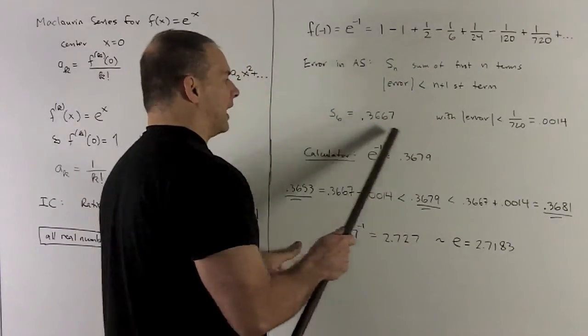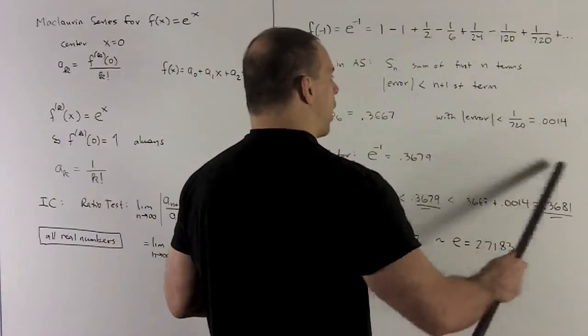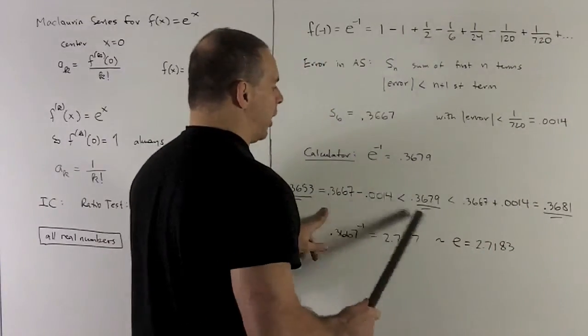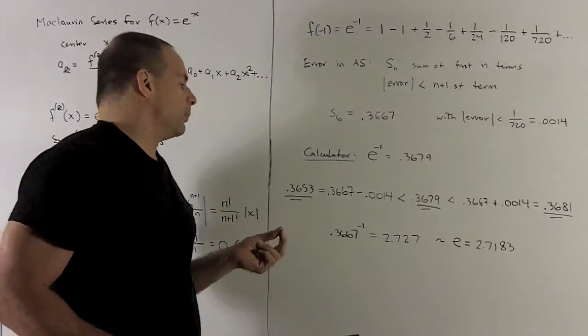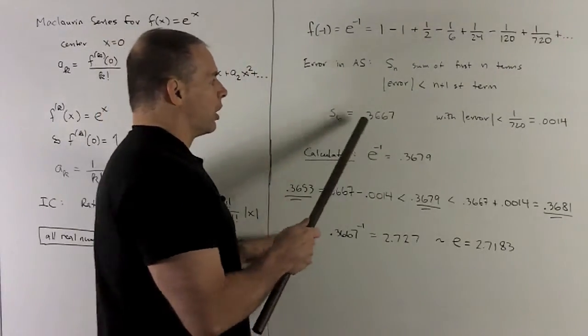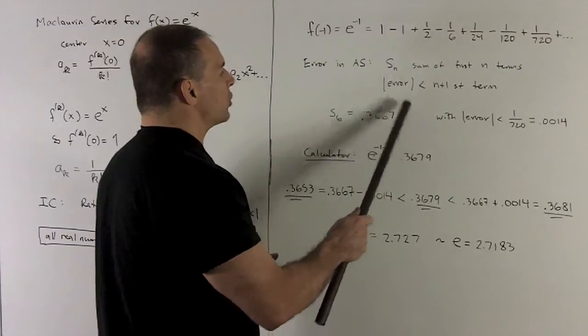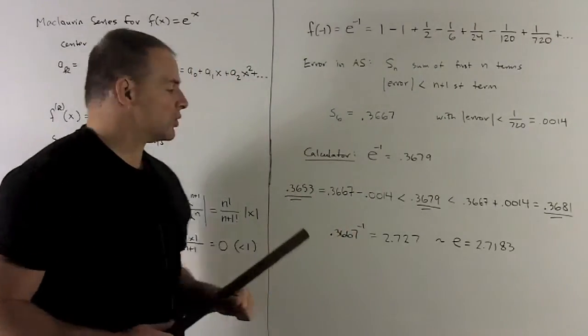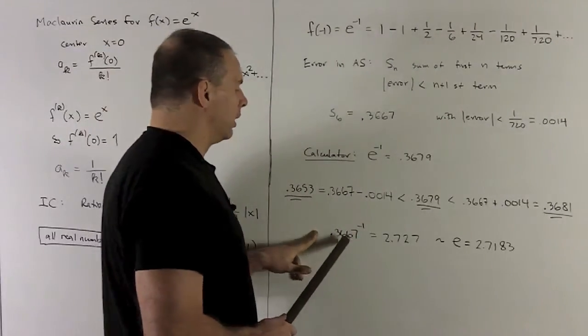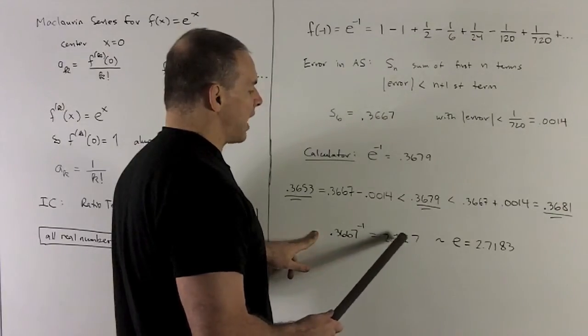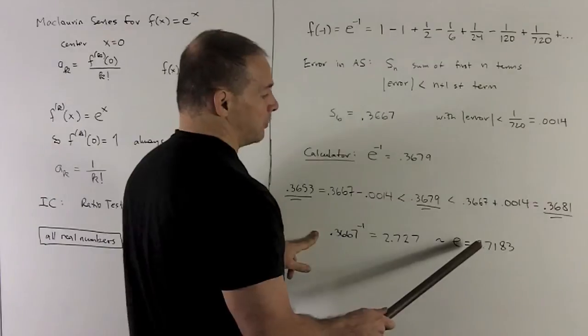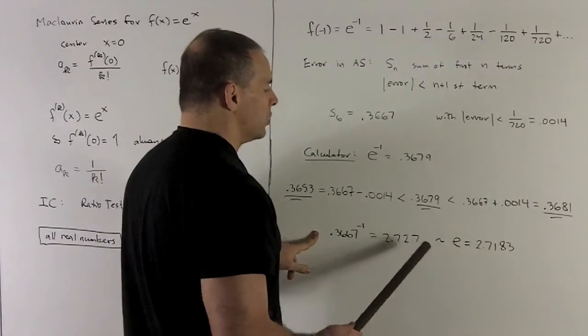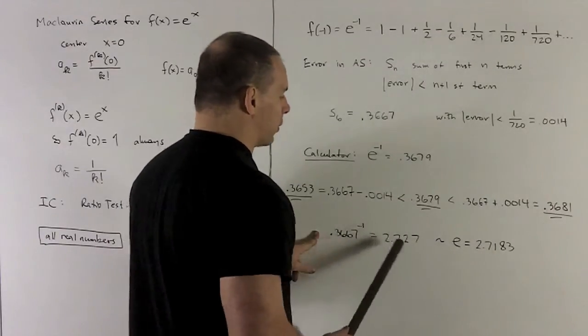So our guess and our error are going to definitely nail down the actual answer. Okay, with that, we're using this as our guess. So we can also use this to get an estimate for e. So all I have to do is take that and flip it over. And that's going to give me 2.727. The actual value for e is going to be 2.7183. So we see, it's not great, but it's not that bad either.